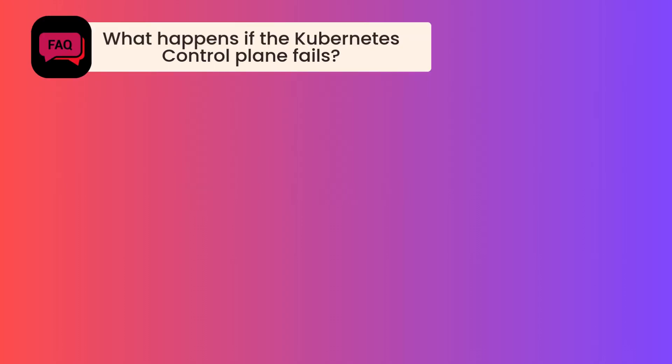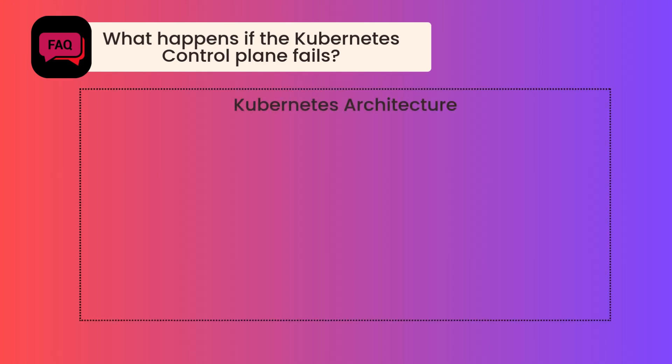Let's begin with our first interview question: what happens if the Kubernetes control plane fails, or otherwise the Kubernetes control plane goes down? To understand this, let's visualize the Kubernetes architecture.